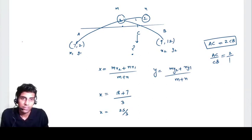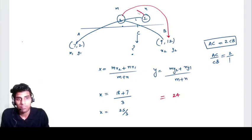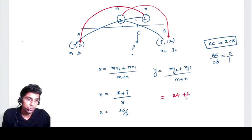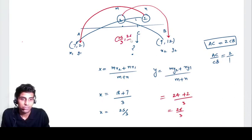Now we need to calculate the coordinate for y. Again cross multiplication will happen. 2 will be multiplied by y2, so 2 into 12, 24. 1 will be multiplied by y1, so 1 into 2, 2. 2 plus 1, 3. 26 by 3. It means the position of this coordinate in the Cartesian plane is at 25 by 3 comma 26 by 3. I hope you understand this question and you understand this formula. Thank you.